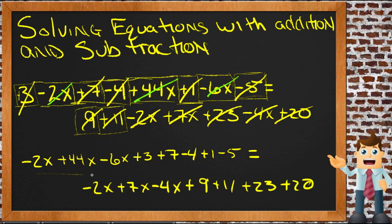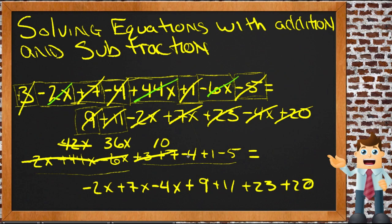So now we've rewritten all this so that all the variables are first and all the constants are second. Now we can combine the things that are the same pretty easily. If we have negative 2x and we add 44, that gives us 42x. Now we have 42x minus 6x, so that gives us 36x, right? 36x. Now that's all the x's we have on that side. Now for numbers, constants, we have 3 plus 7, that's 10. And 10 minus 4 is 6. And 6 plus 1 is 7. And 7 minus 5 is 2. Positive 2, yeah? So now on the left-hand side, we just have 36x plus 2.